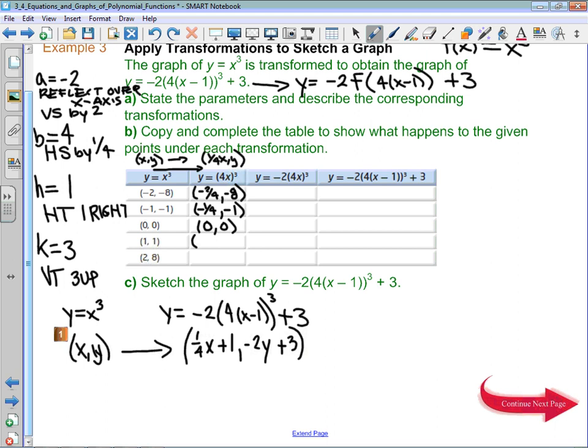1, comma, 1 will turn into 1 fourth, comma, 1. And then finally 2, comma, 8 will turn into 2 fourths, comma, 8. Definitely okay to write those 2 fourths as 0.5 or 1 half. They do certainly reduce into there.